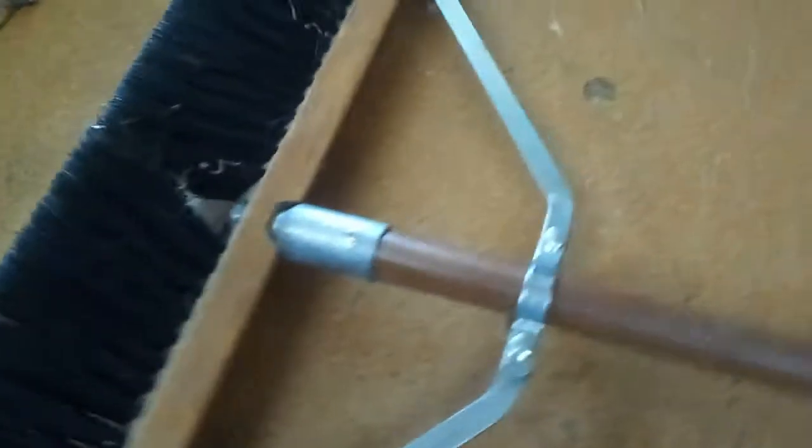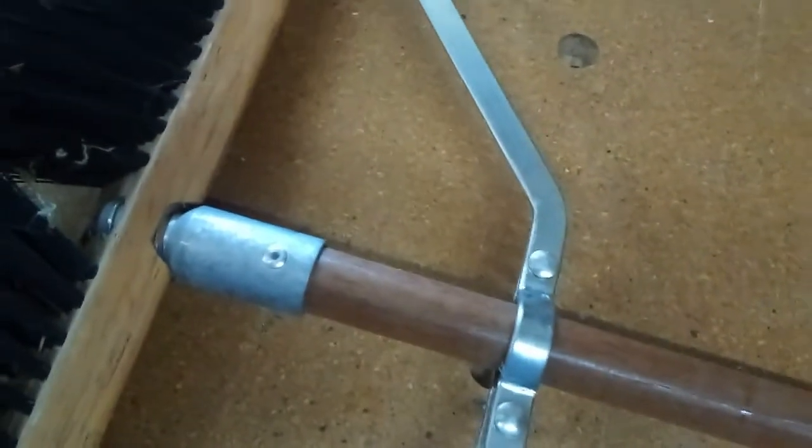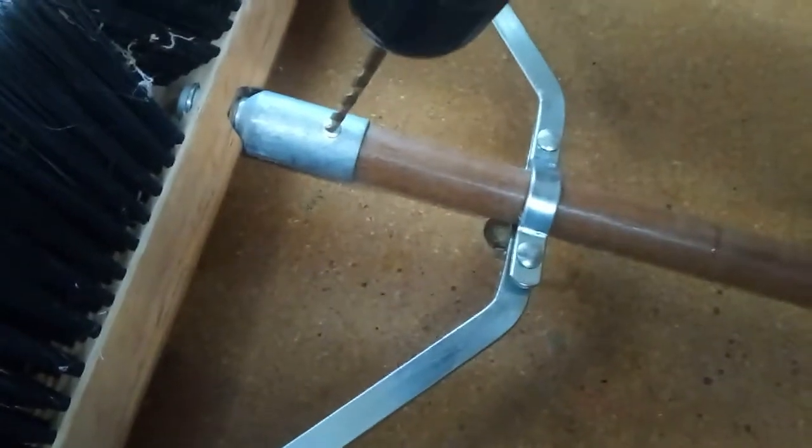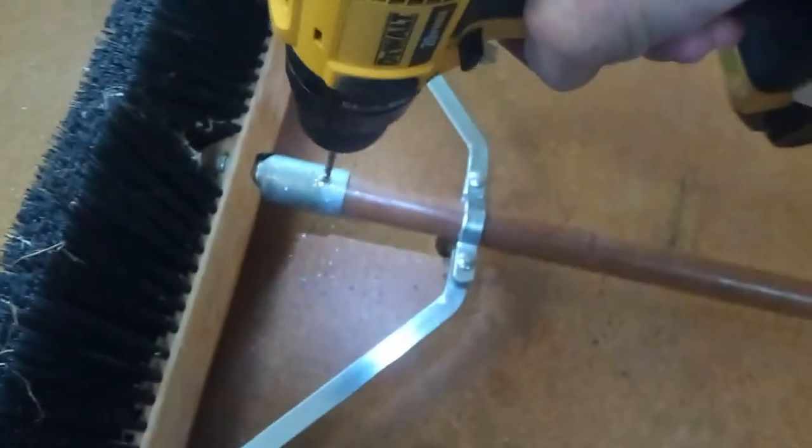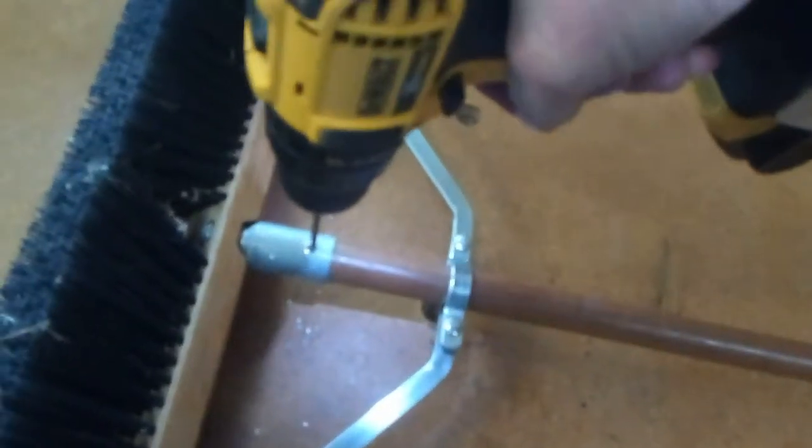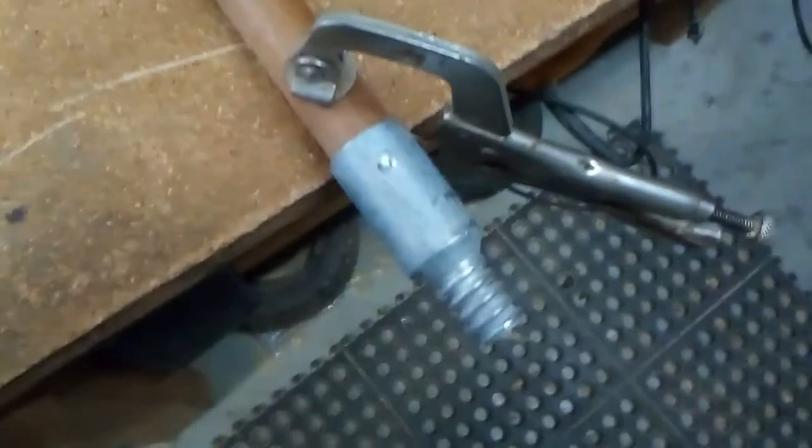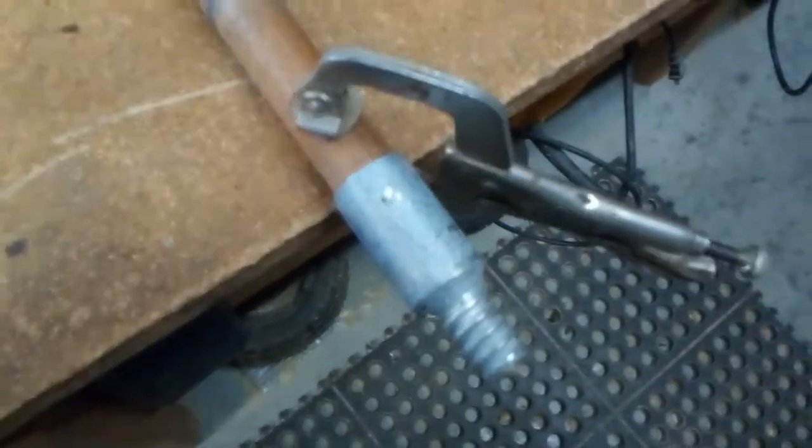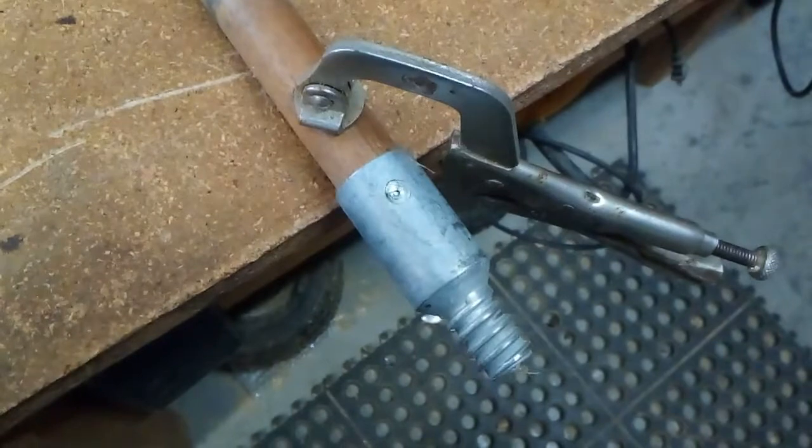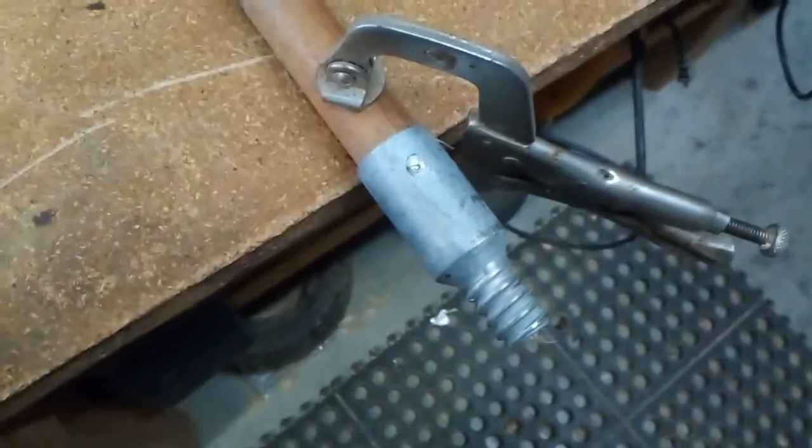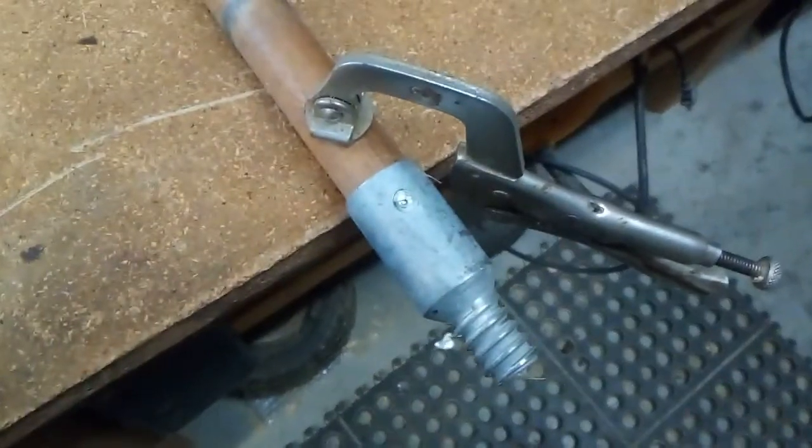First of all, we're going to start by getting this handle out. We've got rivets here. Just take a hand drill and drill those rivets out. Different handles might have the end attached in different ways, or it might not have any end at all and be wooden. That would be a little bit different repair, but you can figure that out yourself.